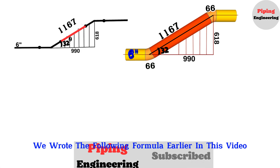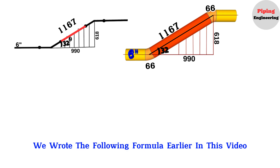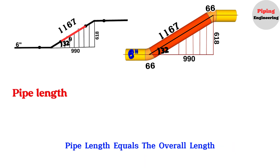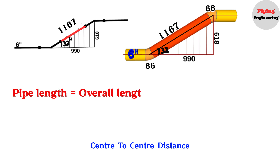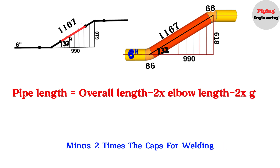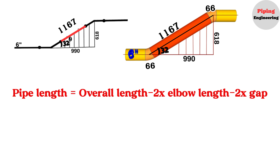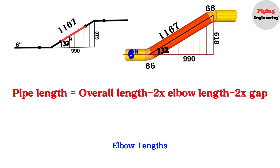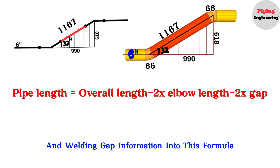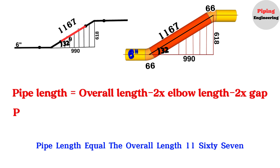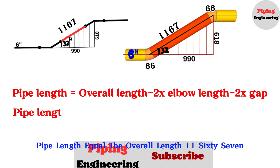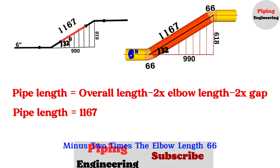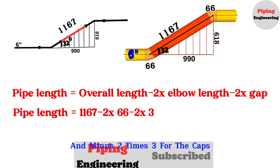Using the formula we established earlier — pipe length equals overall length minus 2 times the take-off length of the elbow minus 2 times the caps for welding — we will now substitute our values: pipe length equals 1,167 minus 2 times 66 minus 2 times 3.